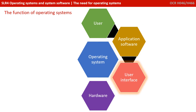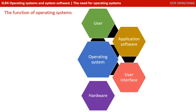Application software today usually involves a common user interface, so the user is interacting with the application software in a familiar and friendly way. The application software has its own user interface, and the operating system is providing a platform for those applications to run, while also providing its own user interface experience in addition to the application software.